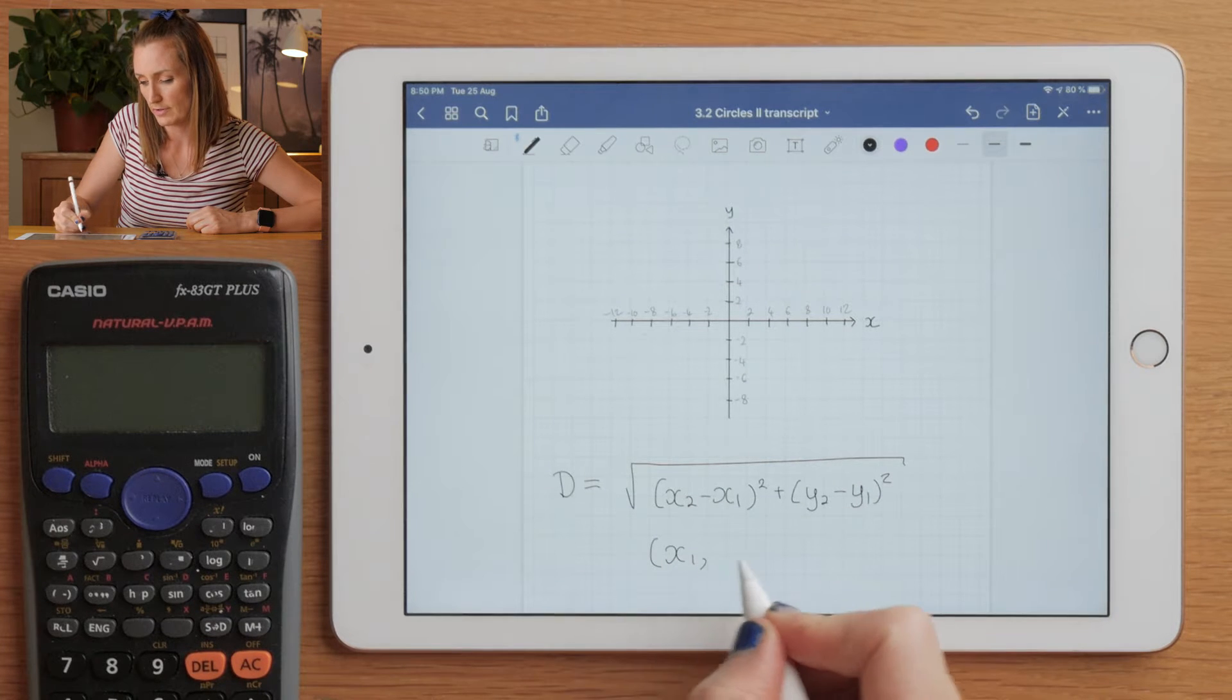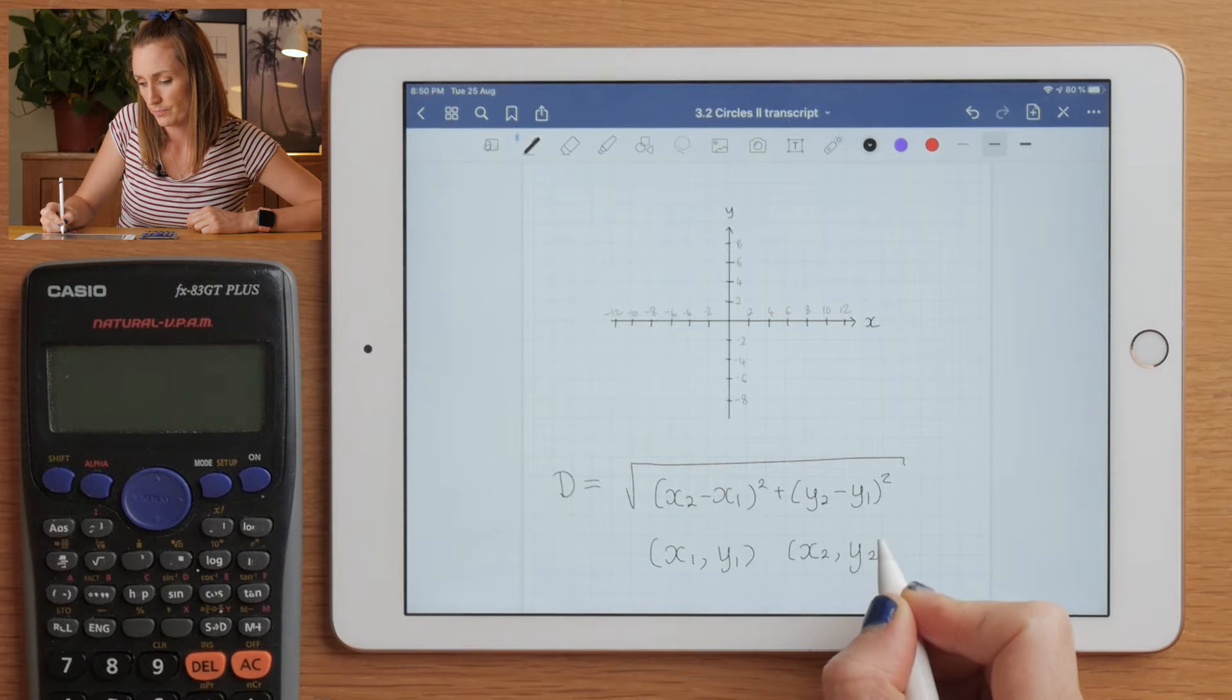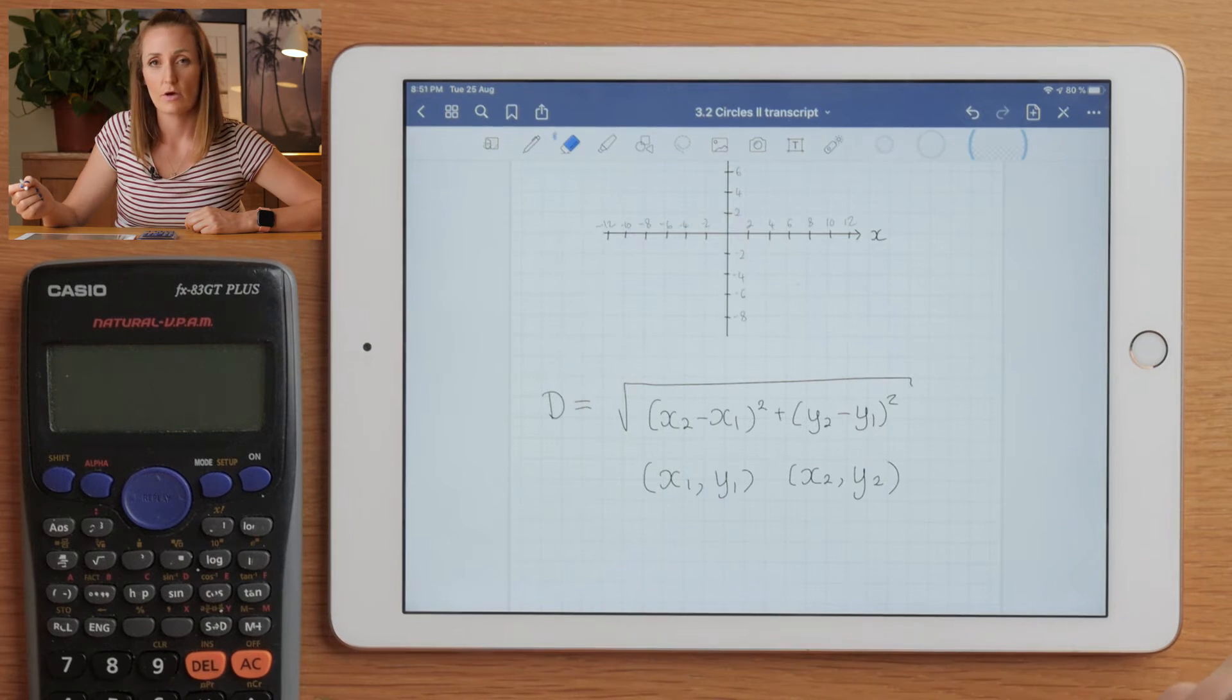So that would be the distance between two points with coordinates (x₁, y₁) and (x₂, y₂), and that's just an application of Pythagorean theorem.